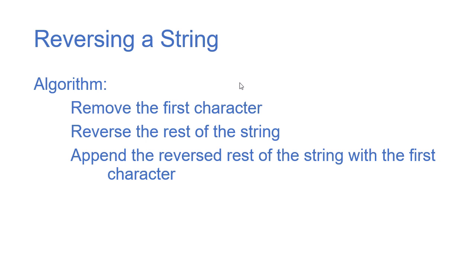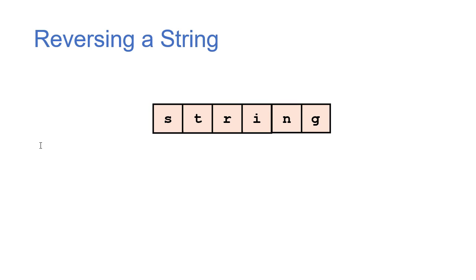The first method we're going to look at is reversing a string. Our algorithm to reverse a string is to remove the first character, then reverse the rest of the string, and then append that reversed rest of the string before the first character. Each time we make a recursive call, we take what's on the front, put it on the end, and then recurse on the rest of the string.